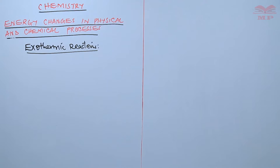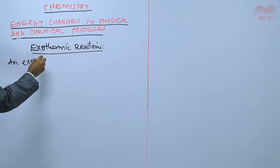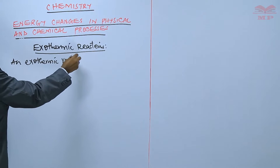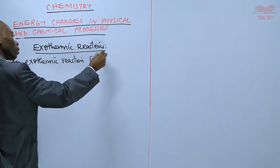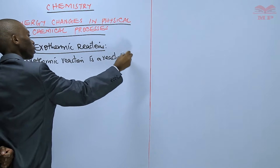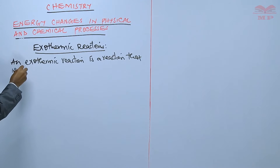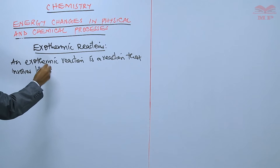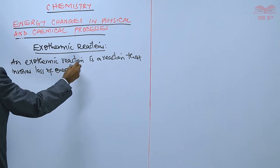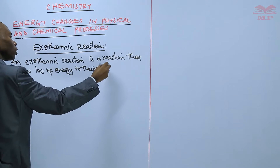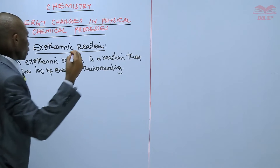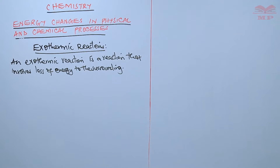So an exothermic reaction is a reaction that involves loss of energy to the surrounding. This energy is lost in the form of heat.